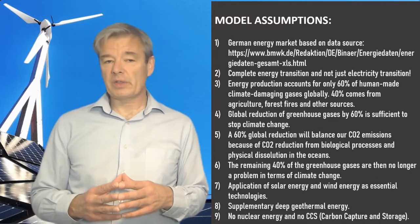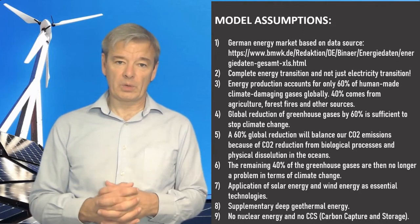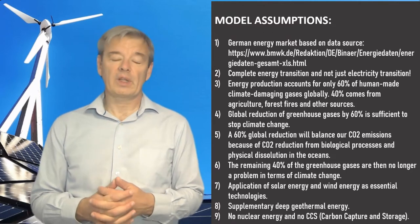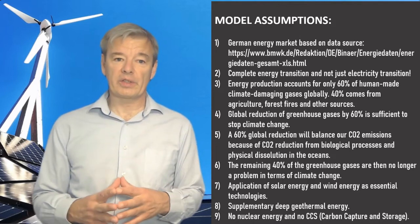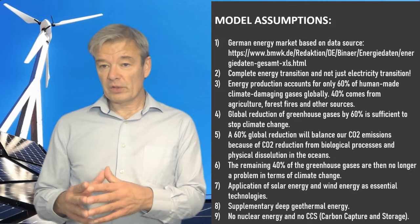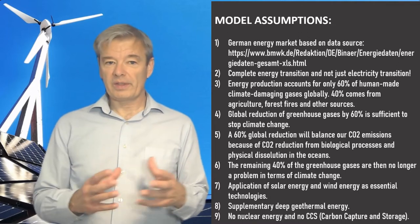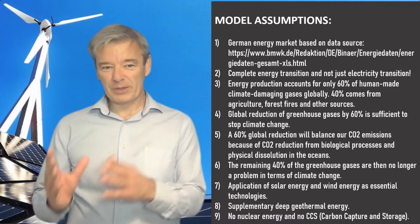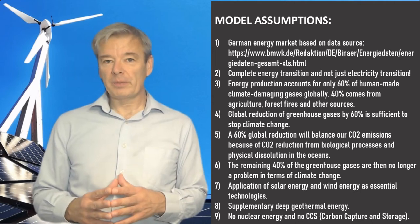Germany has a special situation: it decided not to continue with nuclear power. In 2022 the last three nuclear plants were closed. There is a current energy crisis and discussion, but the decision was made to exit nuclear. We are in the European grid — on the French side there are more than 50 nuclear stations — but for the German model we do not include any nuclear power in production.